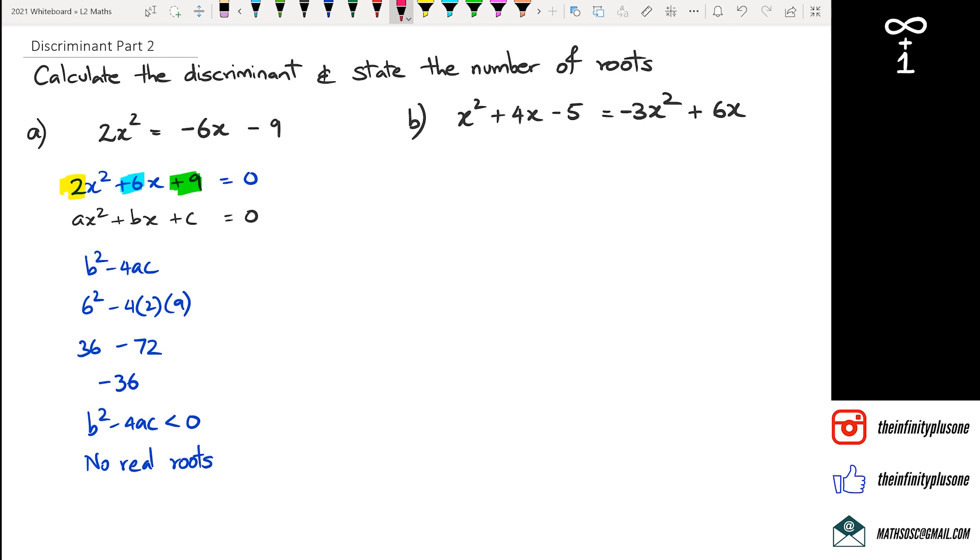If you think about this x² graph, the x² graph is going to look like this. The -3x² graph is going to look like this. And we're trying to figure out whether they're going to intersect twice, once, or no intersection at all.